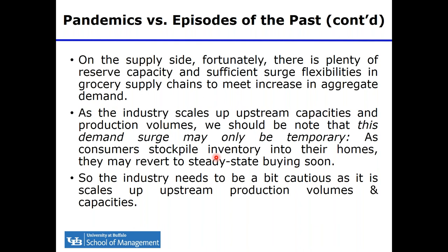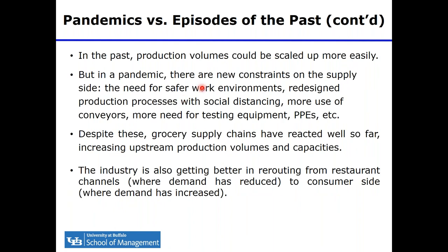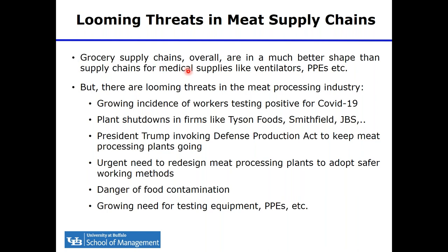The grocery supply chains have ramped up production volumes very well and are also shifting shipments from restaurant channels to the consumer side. But we can't say the same for the supply chains for medical devices — the grocery supply chain is in a much better position. Another point of difference in a pandemic is on the production side: we have new constraints, such as the need to incorporate social distancing into production processes, ensure safe working methods, and provide plenty of testing equipment and PPE for workers.